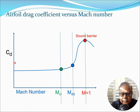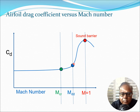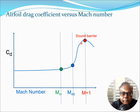If you look at the drag coefficient CD with respect to the Mach number, it has a pretty constant value for a long time, then we reach the critical Mach number, after which there is a slight increase, and after the drag divergence Mach number it starts to increase quite dramatically. This point MDD is where CD starts increasing dramatically, which is a problem at sufficiently high speeds.